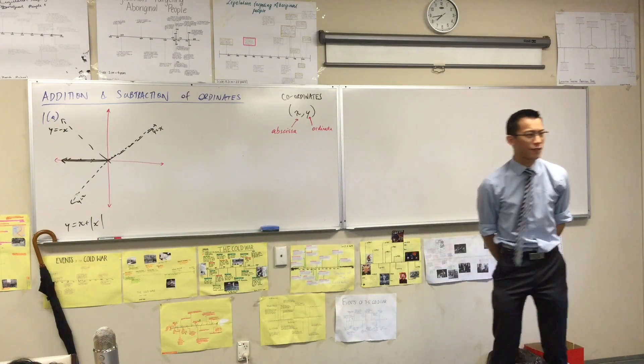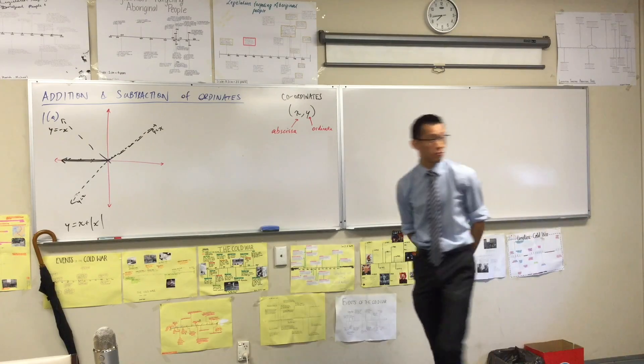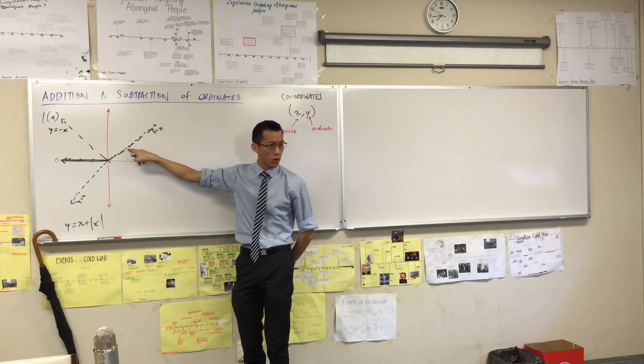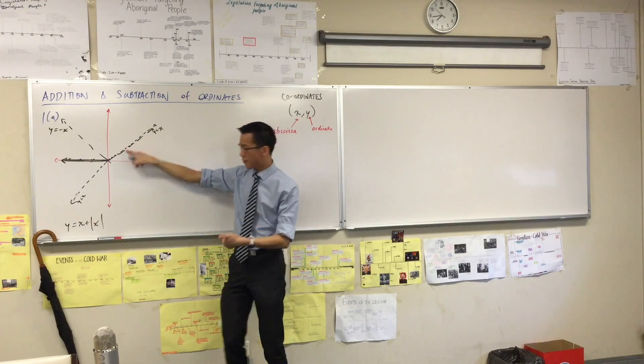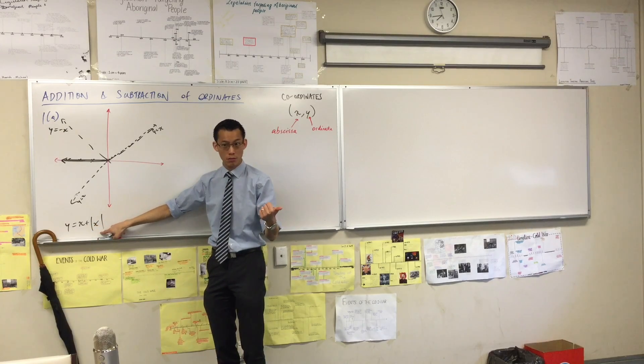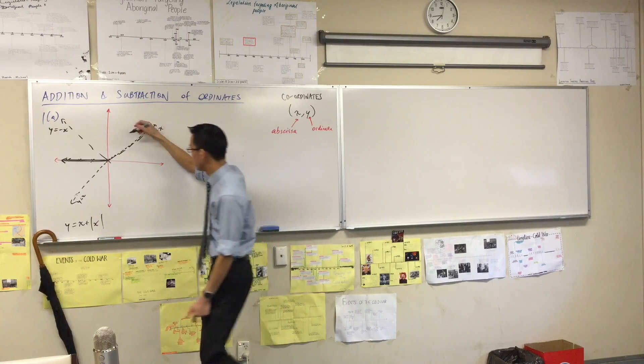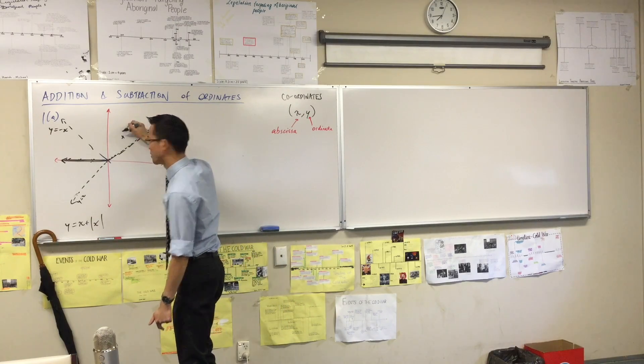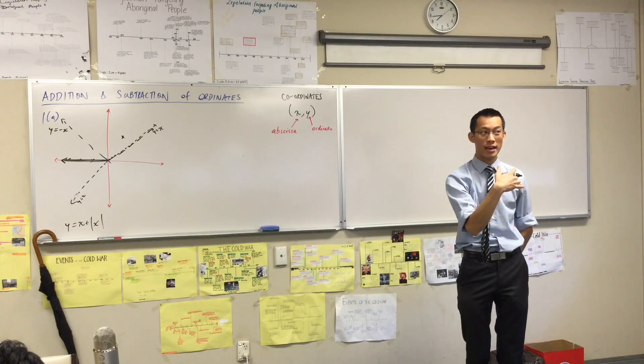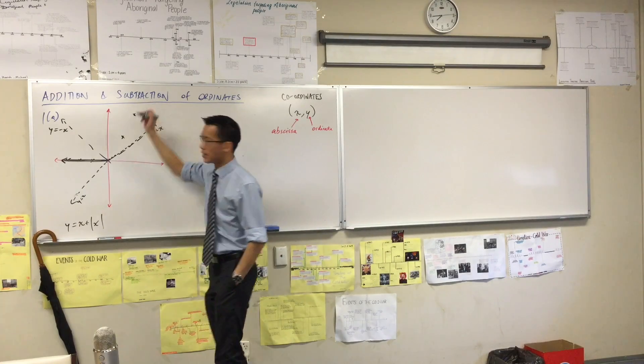Think about the ordinates again, yeah? If I go over to x equals 1 here, the ordinates for the first graph, the ordinates is just going to be 1, and the ordinates for this graph is also going to be 1. So, you add them together, giving you 2. Whoa, we're extension 2 students. I can add, right? 1 plus 1 equals 2. You move over again. You're going to get 2 plus 2 equals 4, okay?